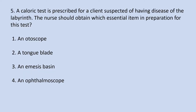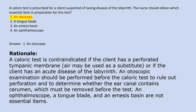A caloric test is prescribed for a client suspected of having disease of the labyrinth. The nurse should obtain which essential item in preparation for this test? 1. An otoscope. 2. A tongue blade. 3. An emesis basin. 4. An ophthalmoscope. Answer 1. An otoscope. Rationale: A caloric test is contraindicated if the client has a perforated tympanic membrane. An otoscopic examination should be performed before the caloric test to rule out perforation and to determine whether the ear canal contains cerumen, which must be removed before the test. An ophthalmoscope, tongue blade, and emesis basin are not essential items.